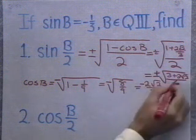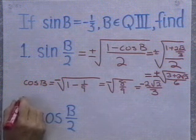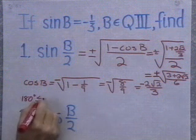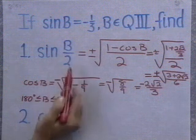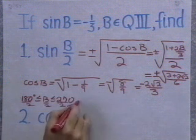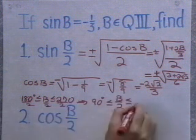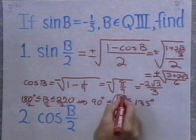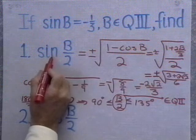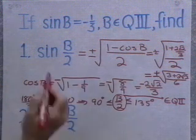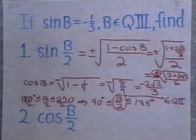I need to determine what algebraic sign this quantity is going to have. If b is in quadrant 3, then 180 degrees is less than or equal to b, less than or equal to 270 degrees. Dividing each part by 2 gives 90 degrees less than or equal to b over 2, less than or equal to 135 degrees. That means b over 2 belongs to quadrant 2. In quadrant 2, the sine function is positive, so I'll take the positive sign. My answer for number 1 is the square root of 3 plus 2 square root 2, over 6.